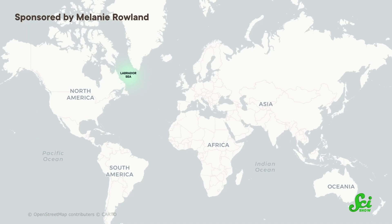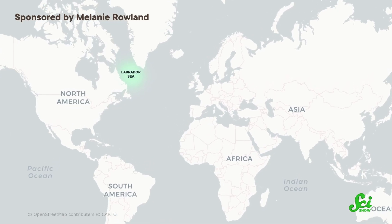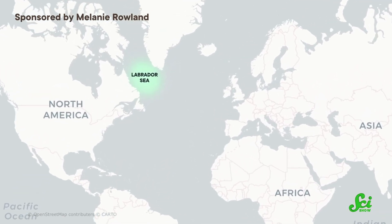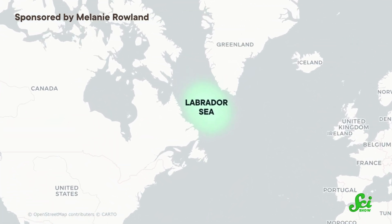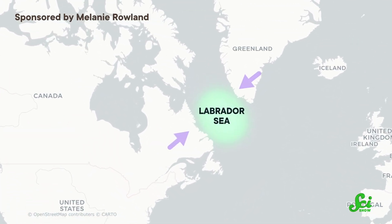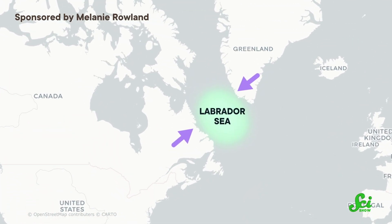The Labrador Sea is an arm of the North Atlantic Ocean about twice the size of California. It lies between Canada and Greenland. Because it's so remote, you might not have spent a lot of time thinking about this body of water. But this remote sea plays a vital role in marine ecosystems.